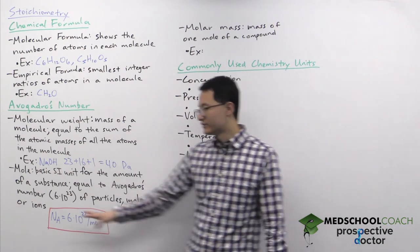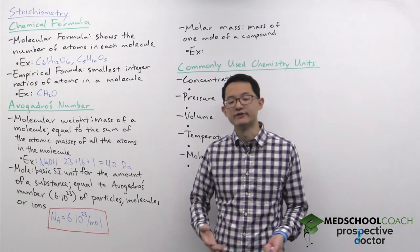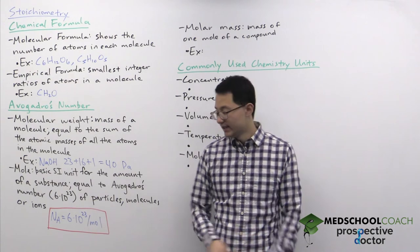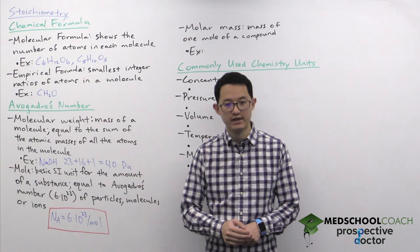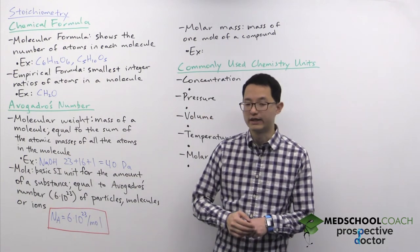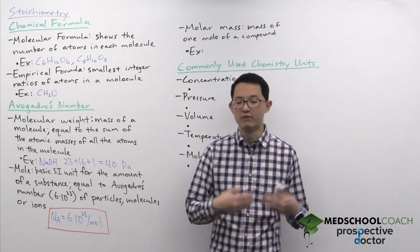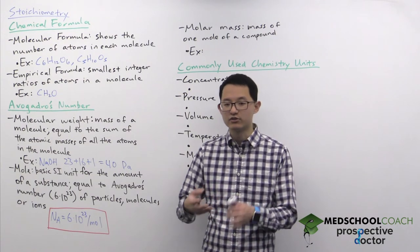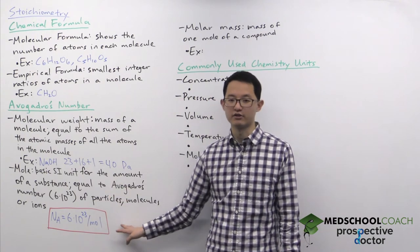And this is where we need to discuss the mole. The mole is a basic SI unit for describing the quantity or the amount of a substance. It is equal to Avogadro's number of particles, molecules, or ions. Avogadro's number is 6 times 10 to the 23. So essentially it tells you, if you have 1 mole of a molecule, that means you have 6 times 10 to the 23 number of molecules. So this is a very large number of molecules.